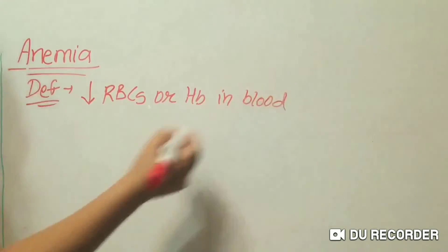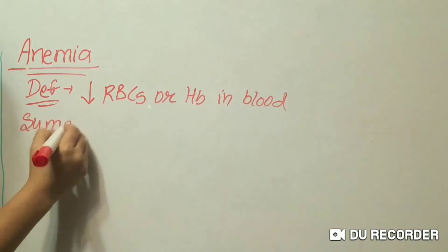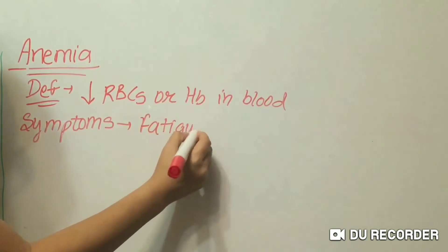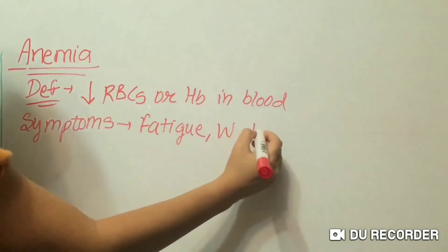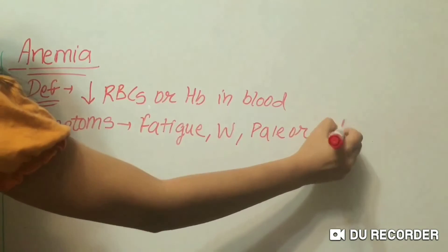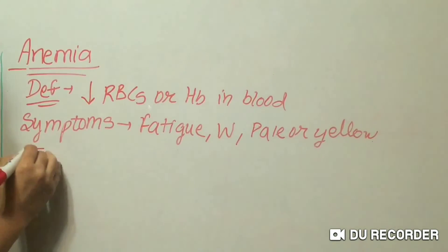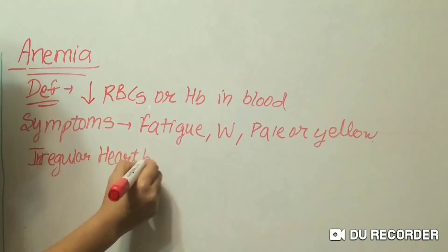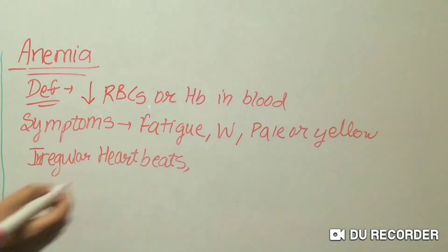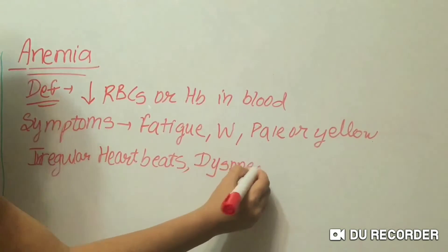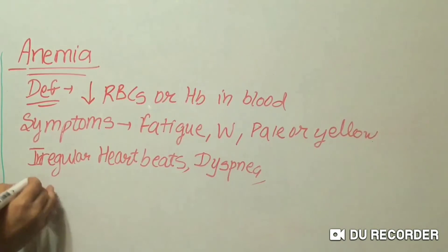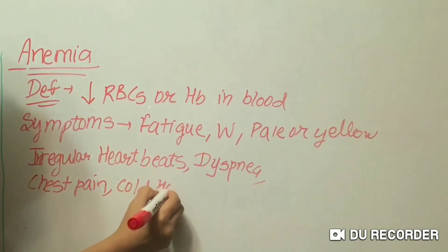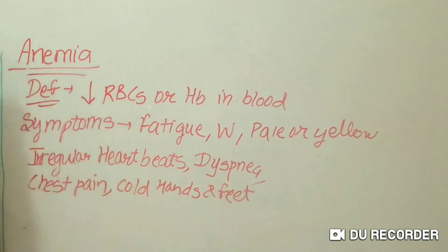What are the symptoms of anemia? Symptoms are: fatigue, weakness, pale or yellowish skin, irregular heartbeats or arrhythmia, shortness of breath or dyspnea, dizziness or lightheadedness, chest pain, cold hands and feet, and headache.